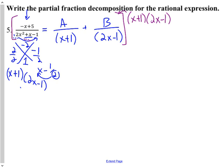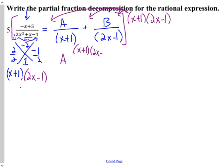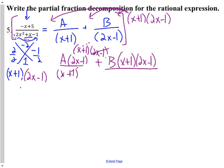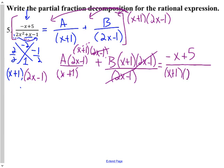Most people can understand what's going to be left over when we distribute. A gets multiplied by x plus 1 times 2x minus 1 over x plus 1, and the x plus 1 cancels, so we only get A times 2x minus 1. B has a similar situation: x plus 1 times 2x minus 1 all over 2x minus 1 — the 2x minus 1 cancels, leaving B multiplied by x plus 1. For the original piece, negative x plus 5 over x plus 1 times 2x minus 1, everything cancels and we're just left with the numerator.